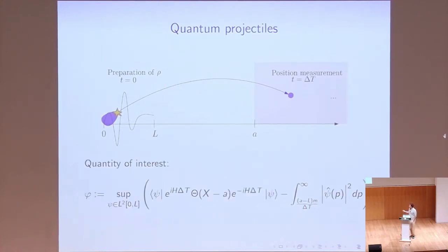So the quantity we're interested in, of course, is the supremum overall particles that start confined in this interval of the difference. If this is positive, this means that there is a way that you can prepare a quantum particle so that you can detect it here more likely than a classical particle with the same distribution of momentum. And this is what we call a quantum projectile.